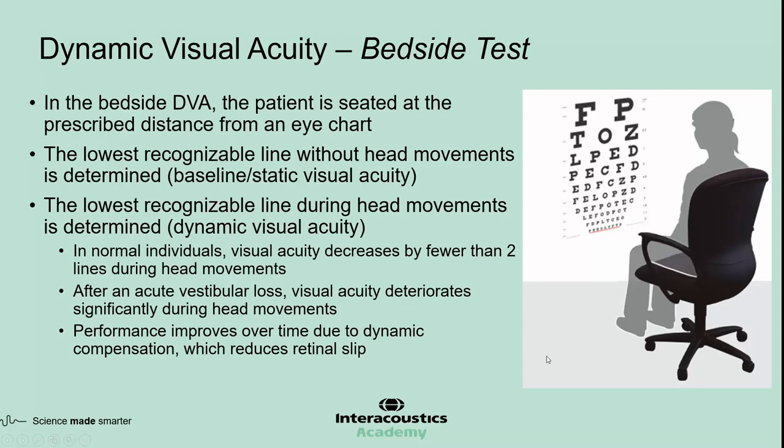The next step is to ask the patient to read the lowest recognizable line during head movements, which determines the dynamic visual acuity. In normal individuals, visual acuity decreases by fewer than two lines during head movements. After an acute vestibular loss, visual acuity deteriorates significantly during head movements, sometimes by as much as six lines or more. But the performance improves over time due to dynamic compensation, which reduces retinal slip and improves dynamic visual acuity.